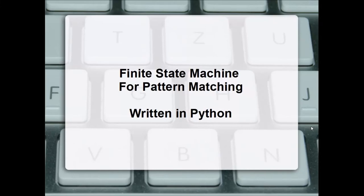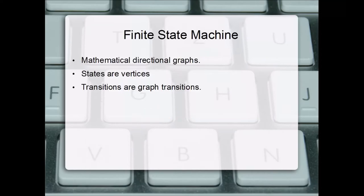Finite state machines are very useful tools for pattern matching. We're going to explain how finite state machines can be used for pattern matching and give an example in Python. Finite state machines are mathematical directional graphs. States are vertices and transitions are graph transitions.